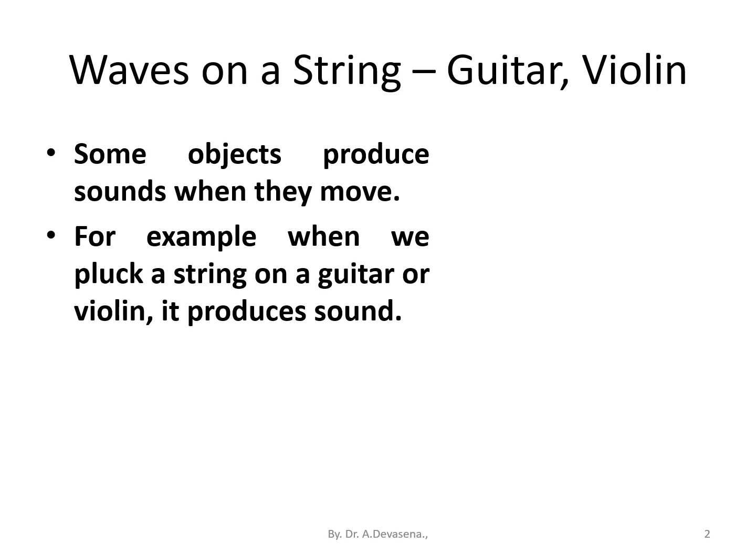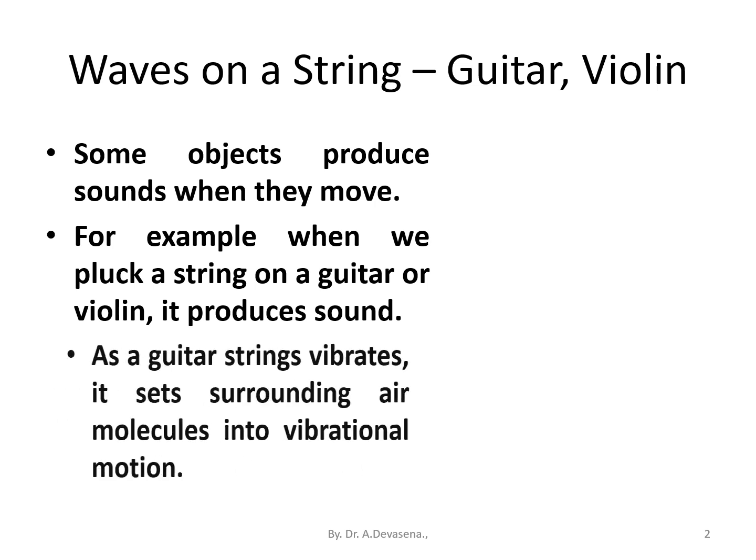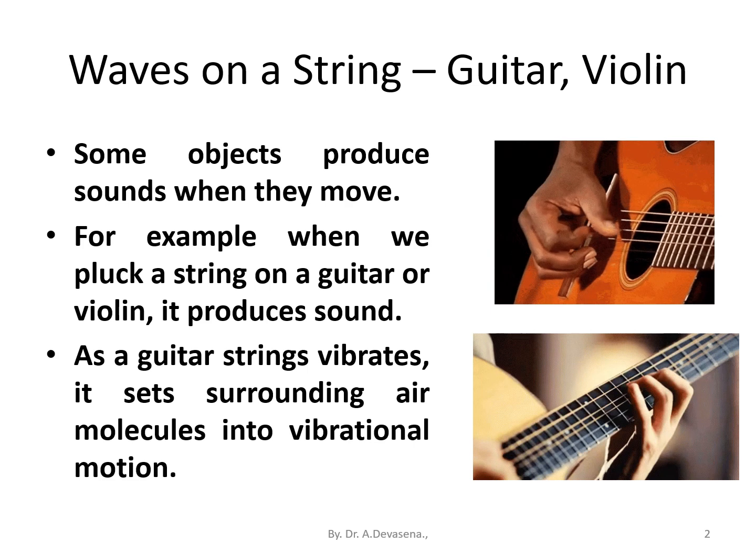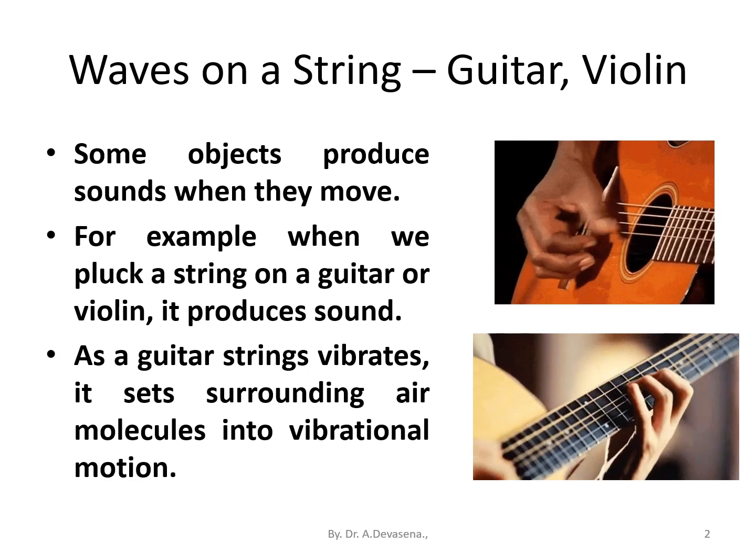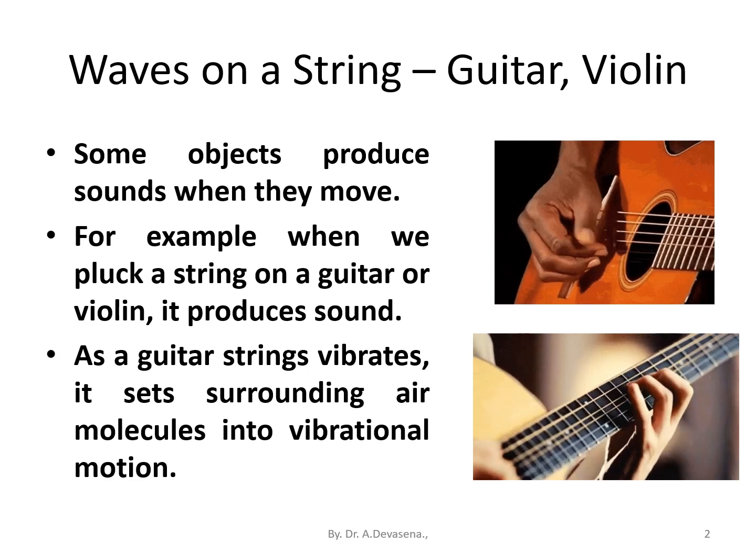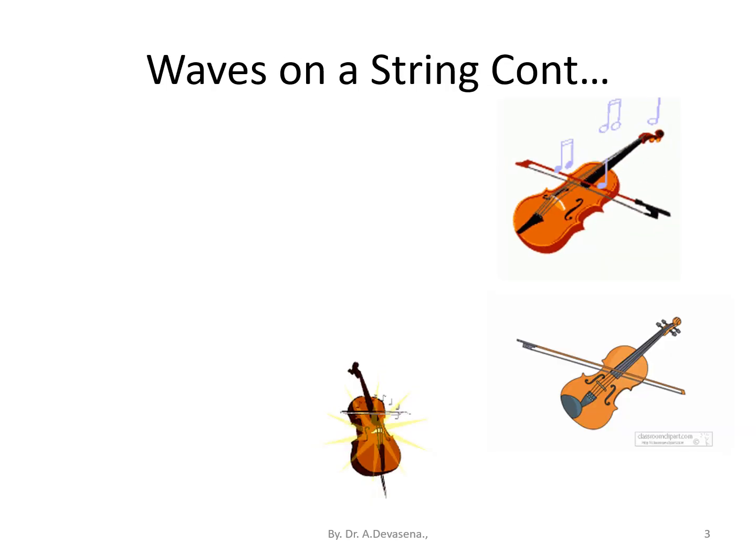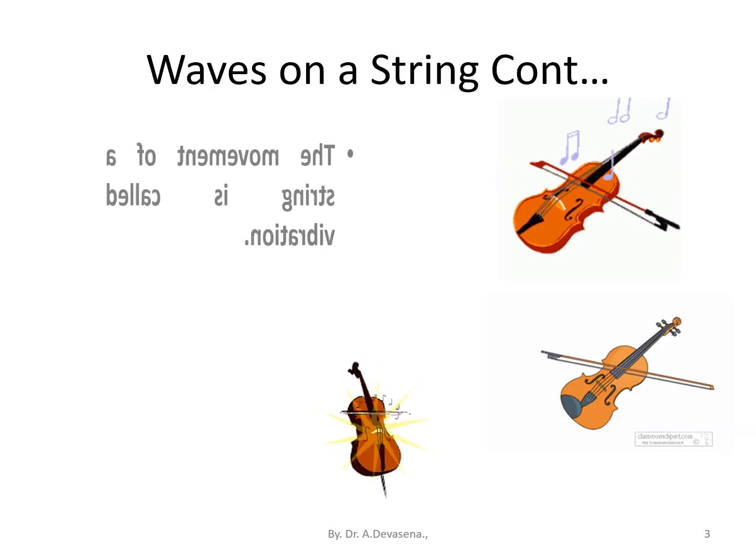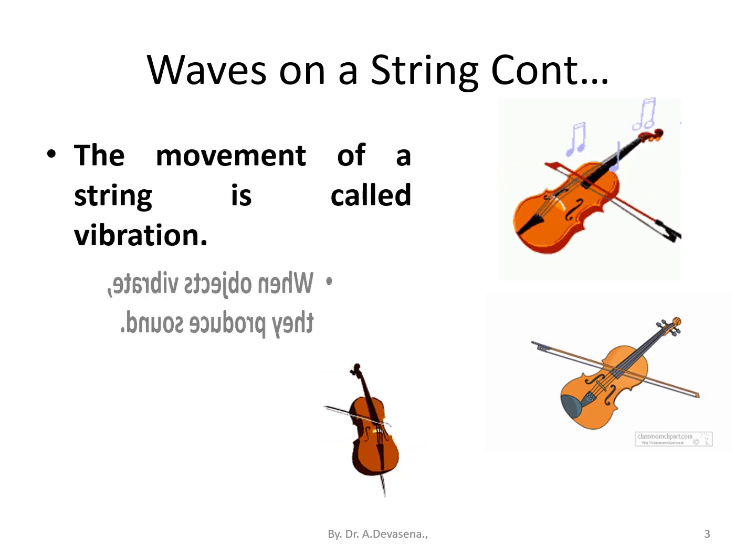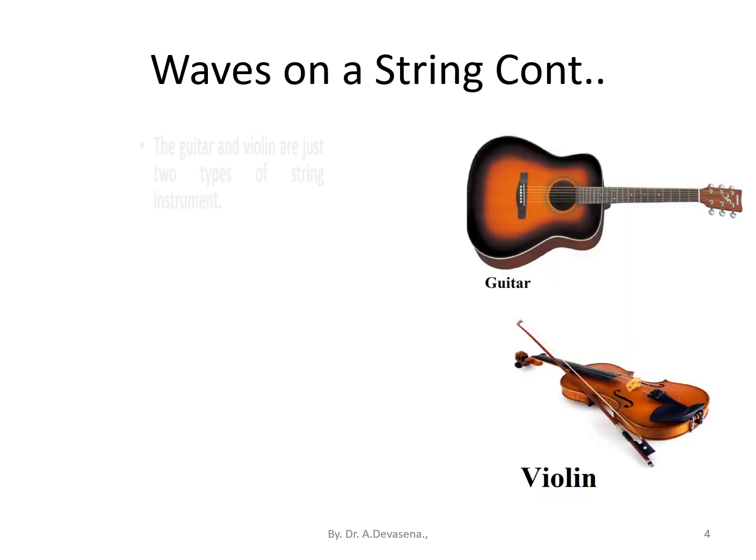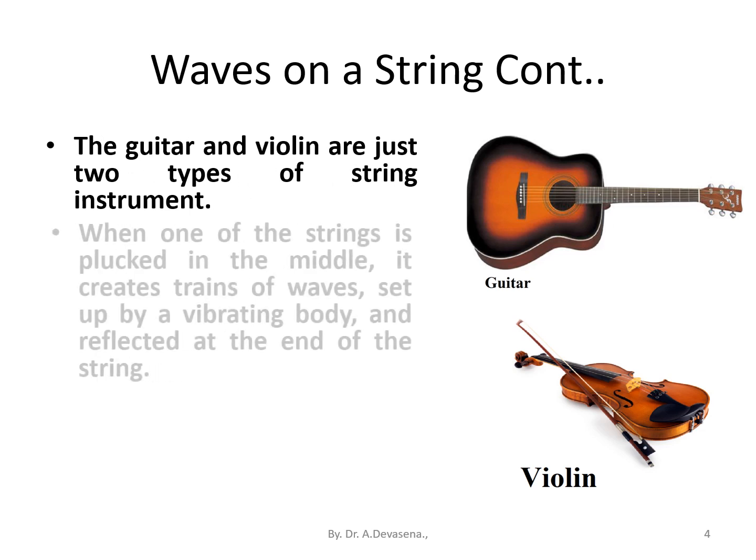Here is a representation of a guitar. As guitar strings vibrate, they send surrounding air molecules into vibrational motion. The movement of a string is called vibration. When objects vibrate they produce sound. The guitar and violin are just two types of string instruments.